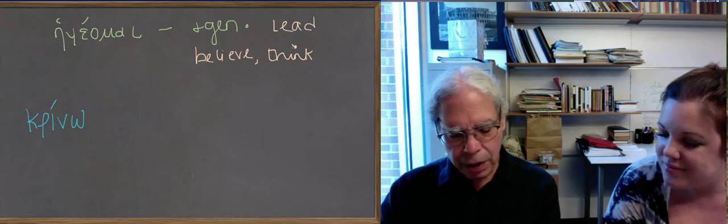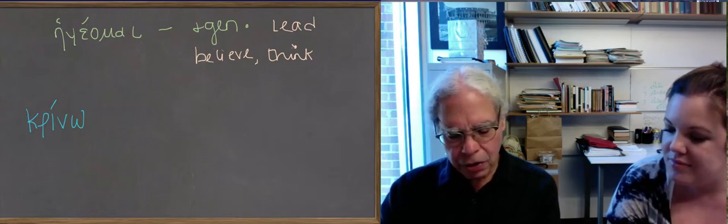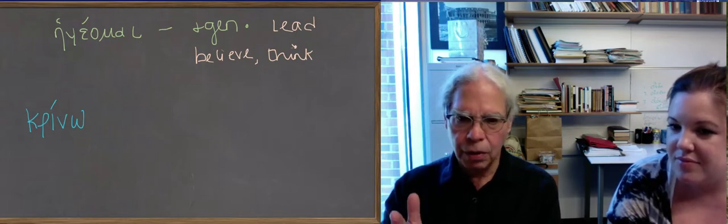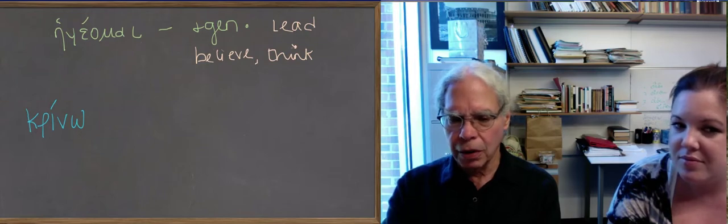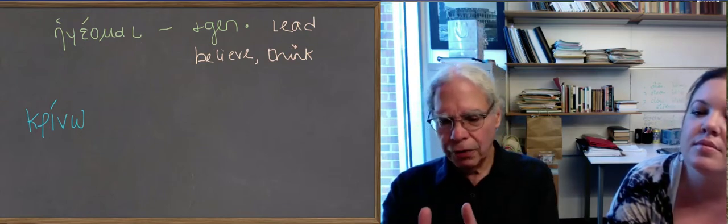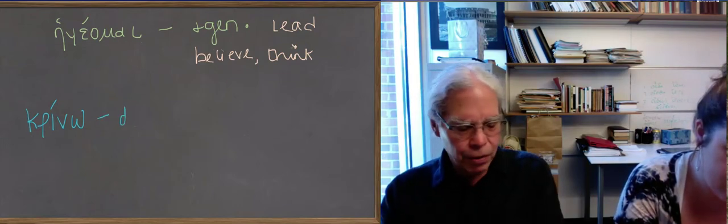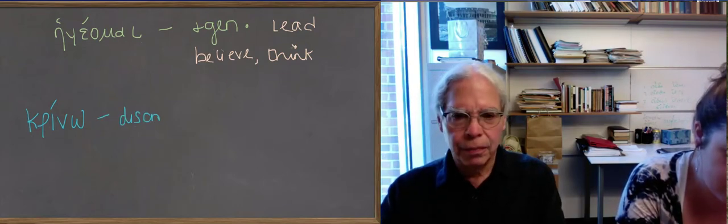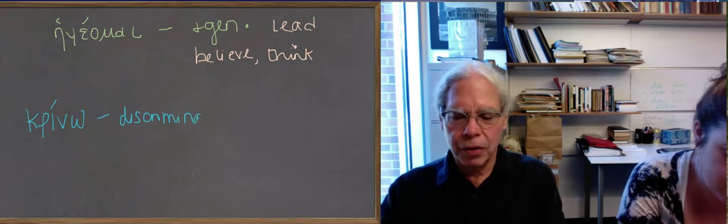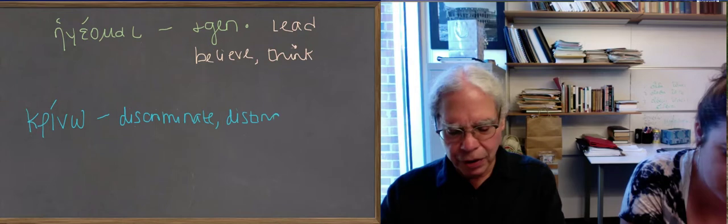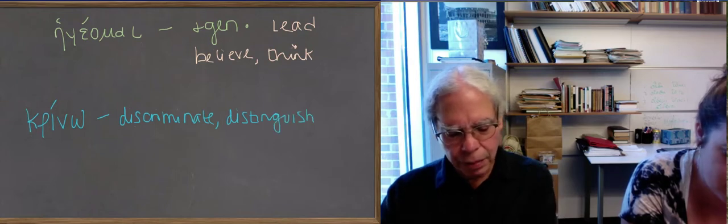And it tells you that it means separate, decide, or judge. And I think you can understand that combination of things if you think that what it really means is to discriminate between things. So if you can separate things, you can distinguish them, and therefore you can judge them. But you can also just mean separate out two groups without the judging part. So that's an important part of its function.